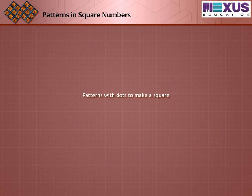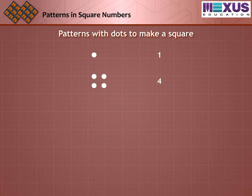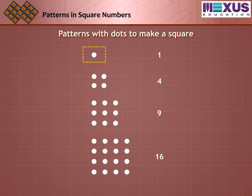Let us make patterns with dots to make a square and count the dots. Start with one dot. Make a bigger square. Now, more bigger and so on. We get one dot, four dot, nine dot, sixteen dot and so on.